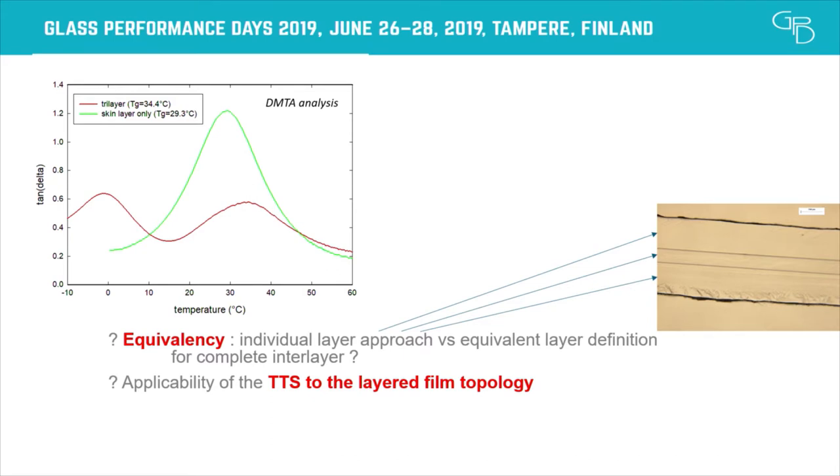The question is: can we measure the multi-layer system completely and come up with some kind of equivalent modulus for that multi-layer system, and how does that compare to measuring the individual layers separately? Another problem is whether the TTS principle — time-temperature superposition — is actually working when you have a multi-layer system, which is also not straightforward.